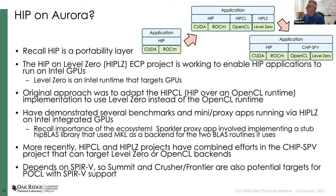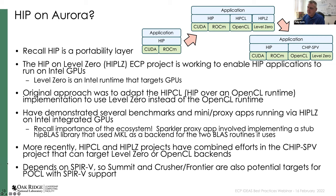More recently, the HIP-CL and HIP-LZ projects combined their efforts into something called CHIP-SPV (pronounced CHIP-Sphere-V). This implementation can live on top of an OpenCL or Level Zero runtime, allowing it to run on Aurora and several other systems. It depends on SPIR-V as a portable intermediate language for GPU code. It is possible that Summit, Crusher, and Frontier could be potential targets using an open-source OpenCL implementation called PoCL if it has SPIR-V support.